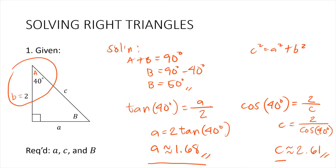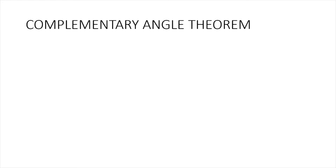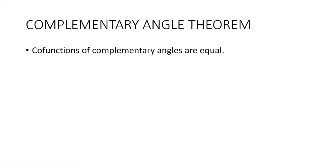Before we move on to the next problem, let's talk about the complementary angle theorem. This theorem states that co-functions of complementary angles are equal. Let's take the right triangle from the previous problem, using the calculated values of the missing sides and the missing angle.